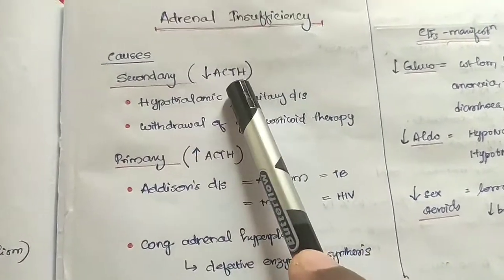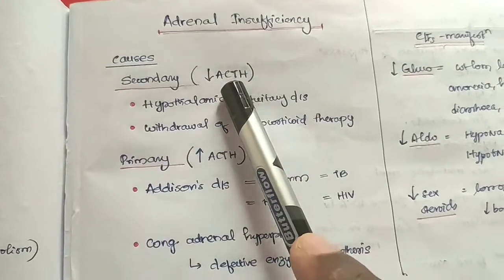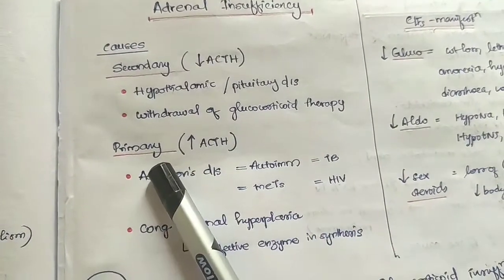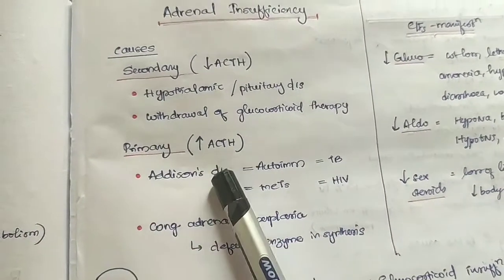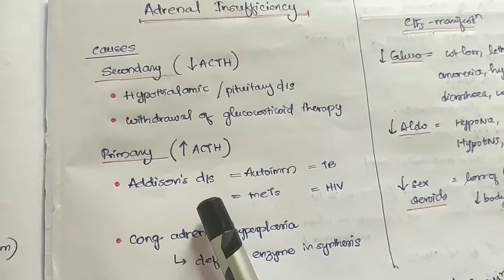To summarize the distinction: in secondary causes, the main lesions are higher up at the central level — the hypothalamus or pituitary. In primary causes, the lesion is at the periphery — at the adrenal gland itself.